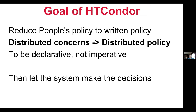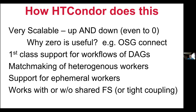Our goal is to be declarative and not imperative, and let the system make all the decisions. Condor is very scalable. A lot of people think about scalability in terms of scaling up to humongous numbers — and Condor pools can scale up to hundreds of thousands of machines — but it's also really important that we scale down. A Condor pool can scale down to a size of zero worker nodes. You can have a submit point with no local machines attached, and maybe later add machines via the cloud or OSG. OSG Connect is essentially a site with zero machines, and we're very proud of this ability to scale both up and down.